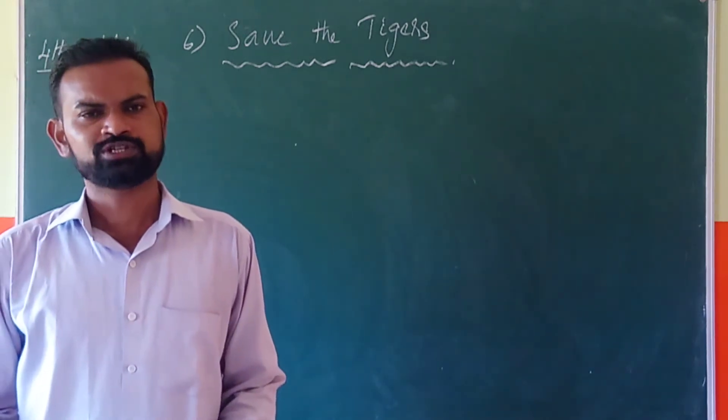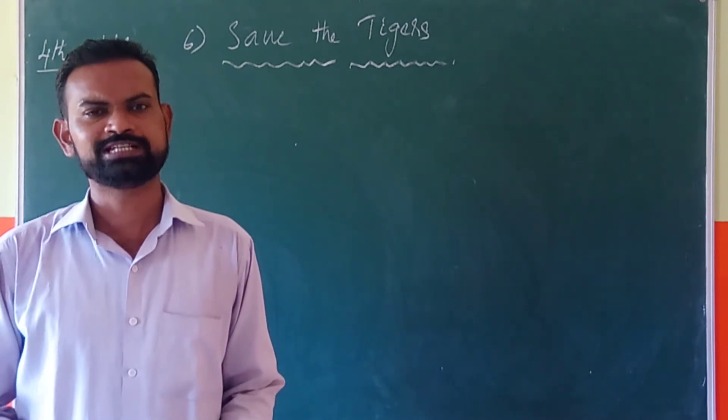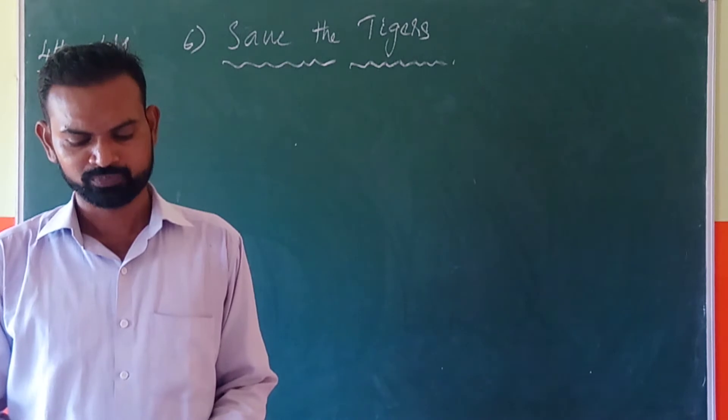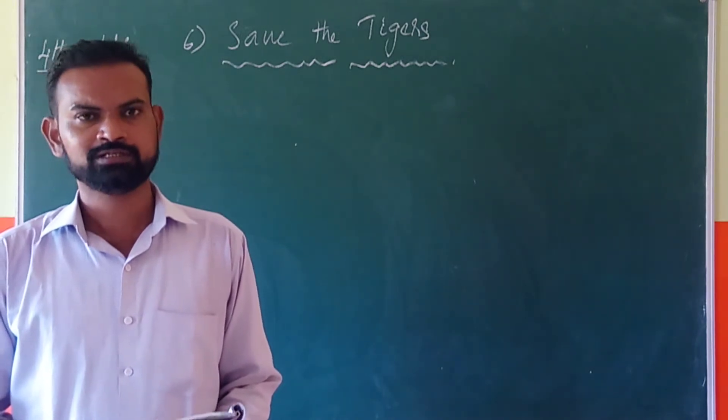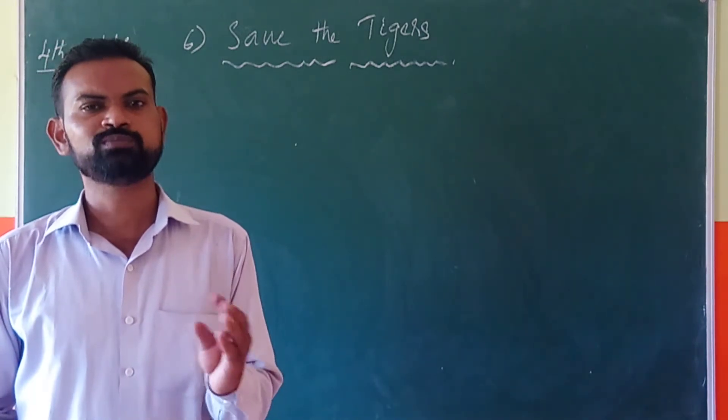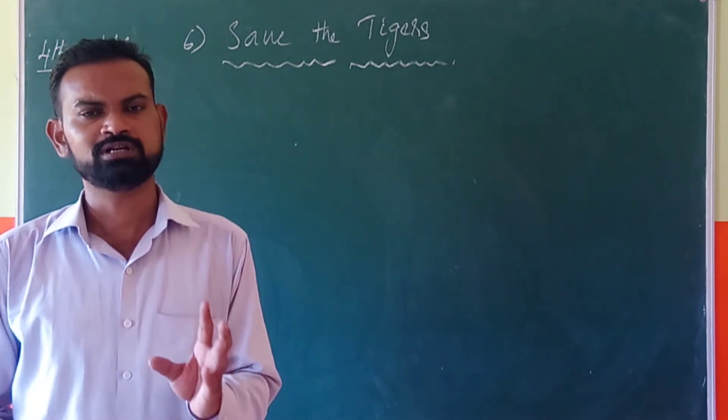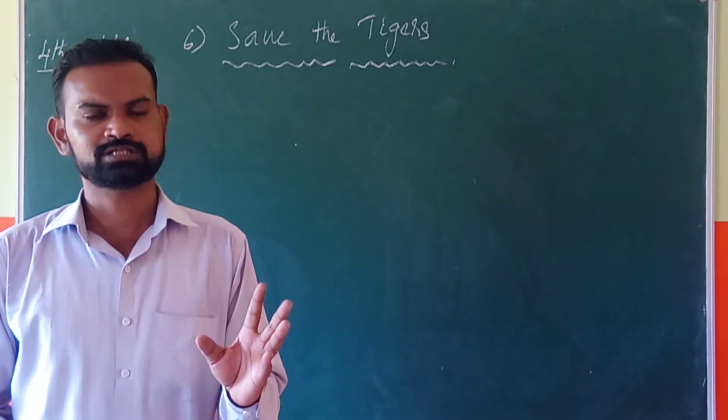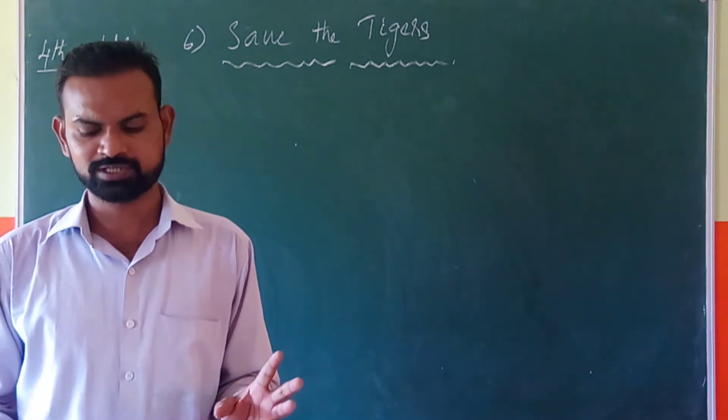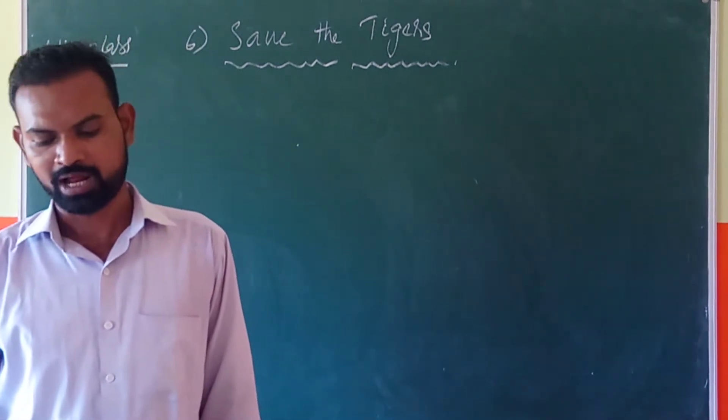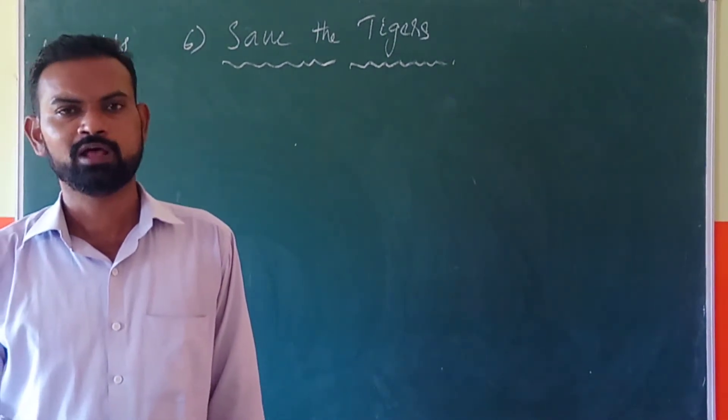So, yesterday, last class, we had to discuss tiger measurements. Again, I repeat, tiger family. It was, look like, similar to some animals. They were cousins of tiger. So, what are the animals? First one, lion, the leopard, the jaguar, and lynx, puma. These are the cousins of the tiger.